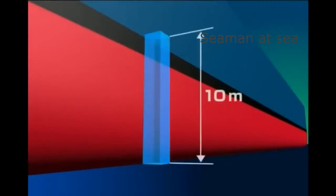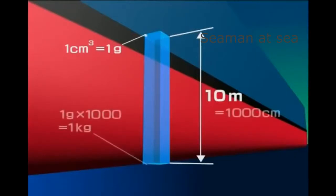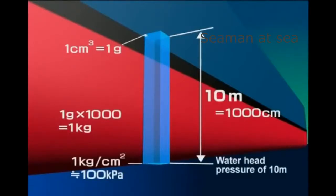Let's consider a 10-meter tall water column. As one cubic centimeter of pure water weighs one gram, a 10-meter tall water column with a basal plane of one square centimeter is equivalent to 1,000 grams or one kilogram. Therefore, the water pressure placed on the basal plane is one kilogram per square centimeter. This pressure is referred to as 10-meter water pressure head.